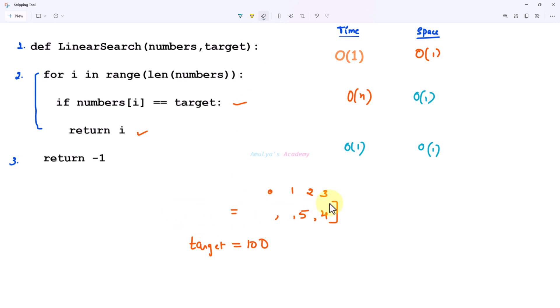Now let's calculate overall time complexity and space complexity here. For time complexity you can add the time complexity and you need to ignore the constant terms and lower order terms. Here we have big O of n and big O of 1, so big O of 1 is lower than big O of n. So here time complexity is big O of n, time complexity of linear search algorithm is big O of n.